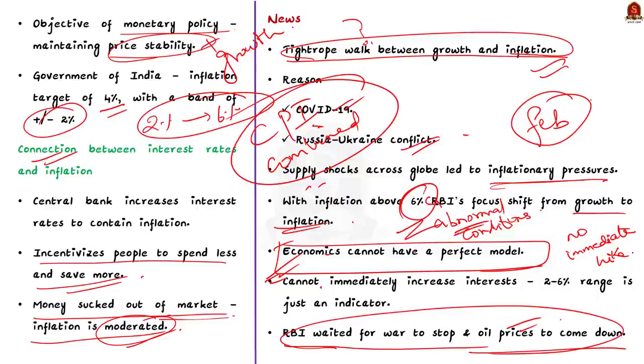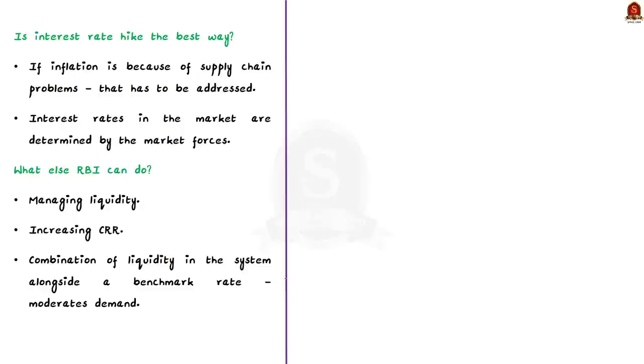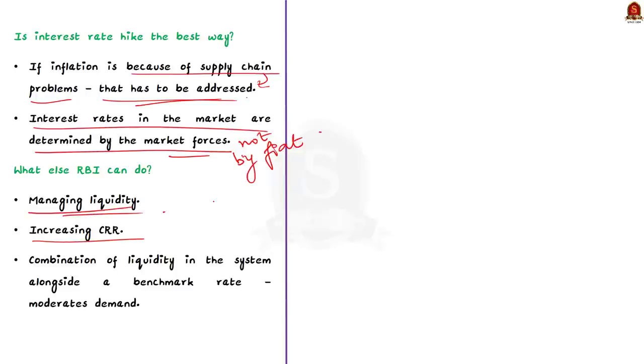If the practice of monetary policy is as simple as creating a model, an algorithm could do a better job than a central banker, right? So according to this expert, this is a good time to raise interest rates. With this information, let us see, is the interest rate hike actually a great way of controlling inflation? Actually, it depends. If the inflation is largely because of problems with the supply chain, then the problem with the supply chain only has to be addressed. Also note that the interest rates in the market are determined by the market forces and not by fiat, that is the government. So what else should RBI do to control inflation? As per the article, an interest rate hike is a necessary but not a sufficient condition. The necessary condition has to come through managing the liquidity. Increasing the cash reserve ratio is one way to manage liquidity. A combination of available liquidity in the system alongside a benchmark rate sends a more comprehensive signal to the market on forthcoming tighter financial conditions which will help moderate demand.